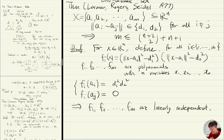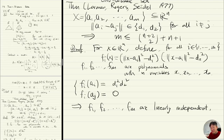This is nice because it implies that f_1, f_2, ..., f_m are linearly independent. It's easy: if you have a linear combination of these polynomials whose sum is zero, then you plug in a_i and you realize that the coefficient of f_i must be zero, and that's true for every i.